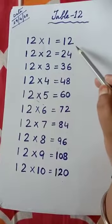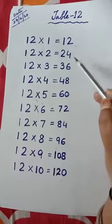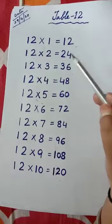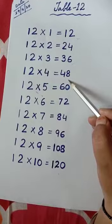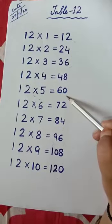Now, come on, start. 12 ones are 12, 12 twos are 24, 12 threes are 36, 12 fours are 48, 12 fives are 60.